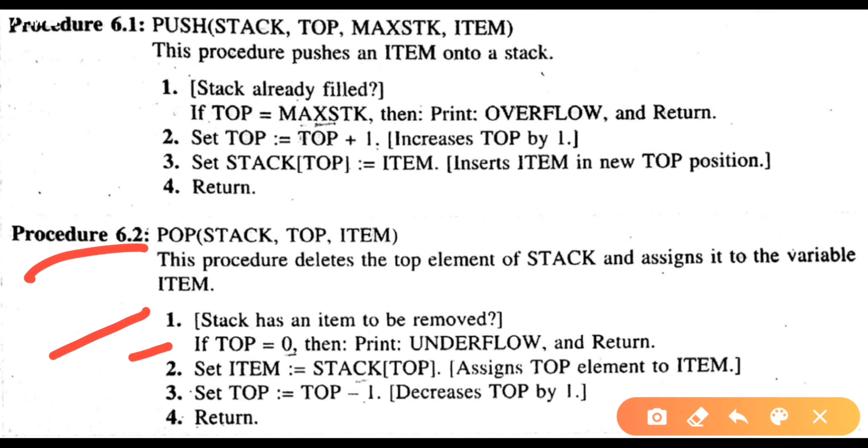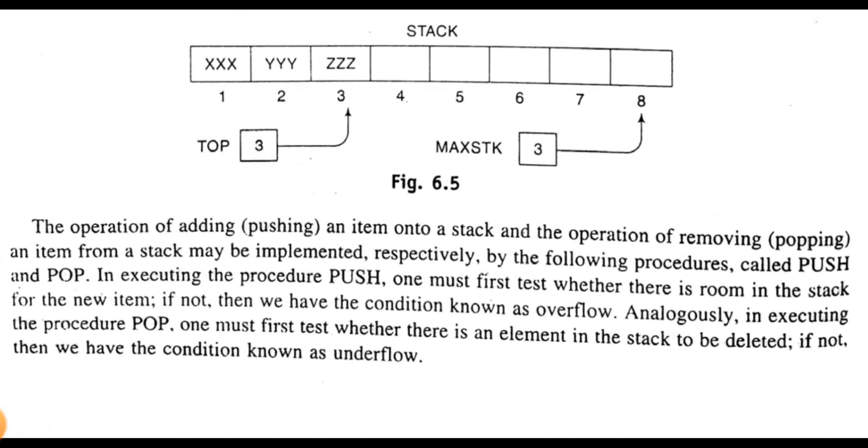Pop operation: If TOP equals 0, print underflow meaning empty and return. Second step: set ITEM equals STACK[TOP] to assign the TOP element to variable ITEM. Third step: set TOP equals TOP minus 1 to decrement TOP by 1.